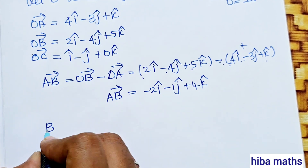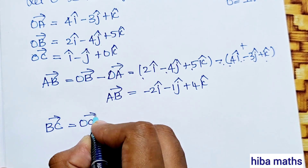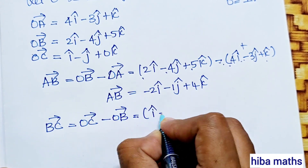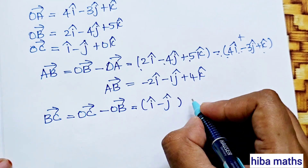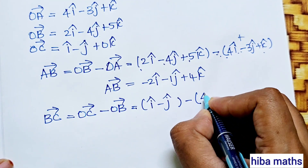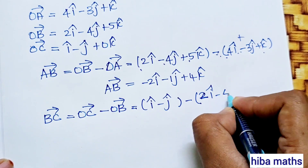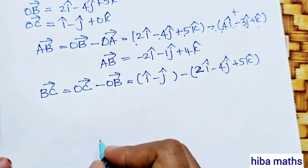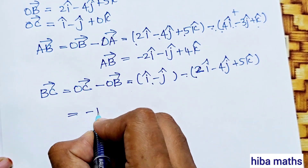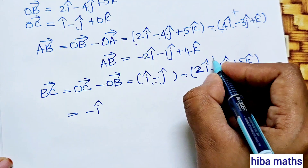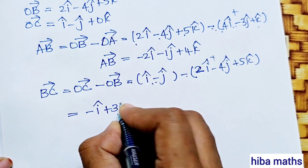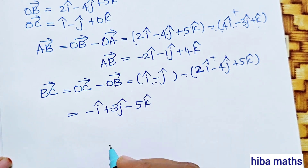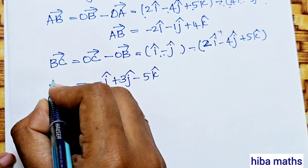BC vector = OC vector - OB vector. OC vector is i - j + 0k, minus OB vector which is 2i - 4j + 5k. That equals (1-2)i + (-1+4)j + (0-5)k = -i + 3j - 5k. This is the BC vector.